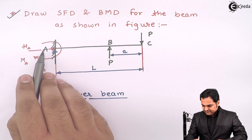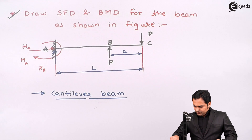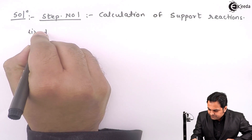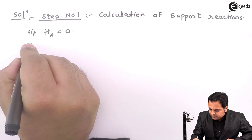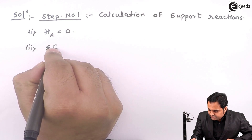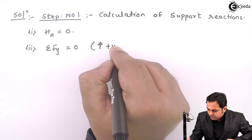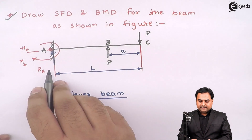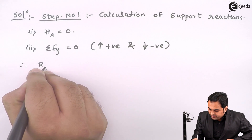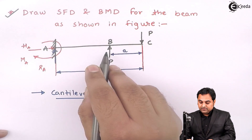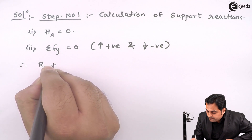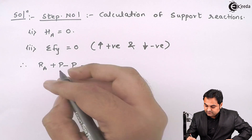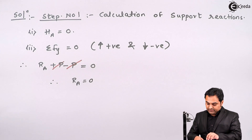Next, we will find their values. For the horizontal reaction at A, this reaction will be there only if there are horizontal forces. Here, as we see, there are no horizontal forces, so H_A equals 0. For vertical reaction, using the condition of equilibrium, summation of F_Y equals 0. Upward forces are positive, downward forces are negative. We have R_A acting upward, then plus P acting upward, then minus P equals 0. So R_A equals 0 — since plus P and minus P cancel out, there is no vertical reaction at point A.